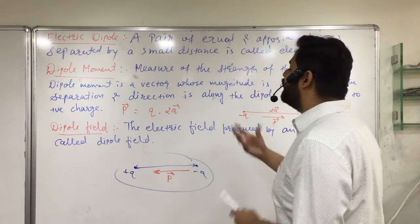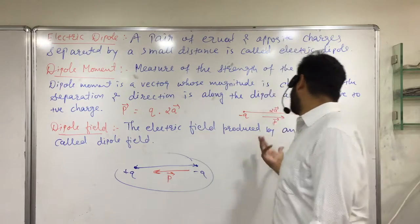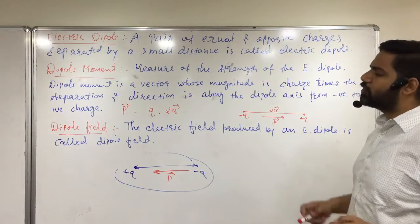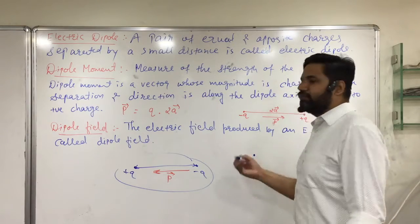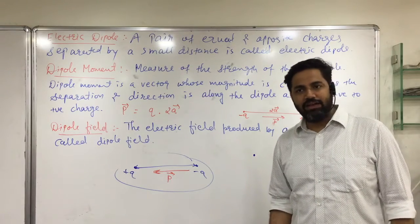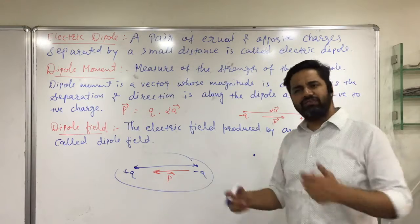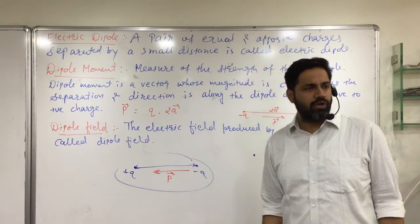So we understood this much. Now, dipole field. The electric field produced by an electric dipole is called dipole field. Just like a charge generates electric field. A dipole also generates electric field, a combined electric field.